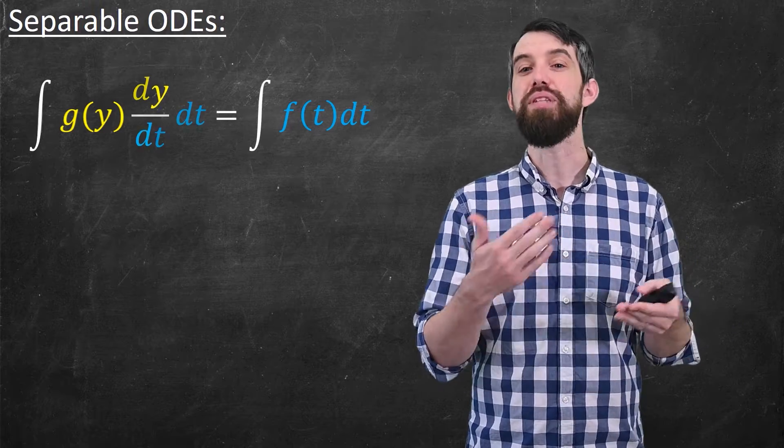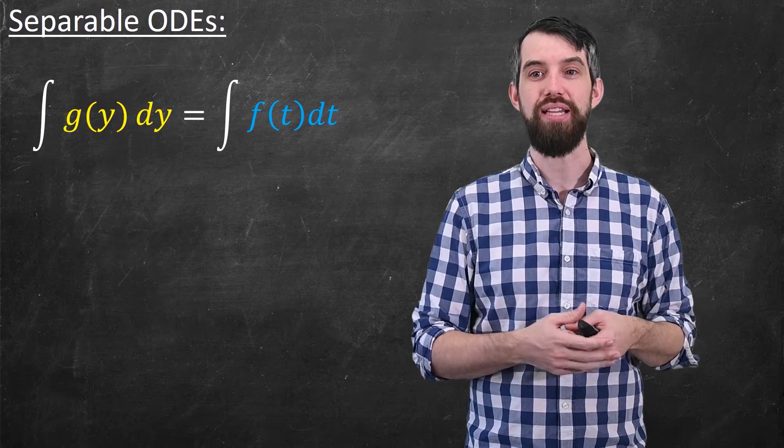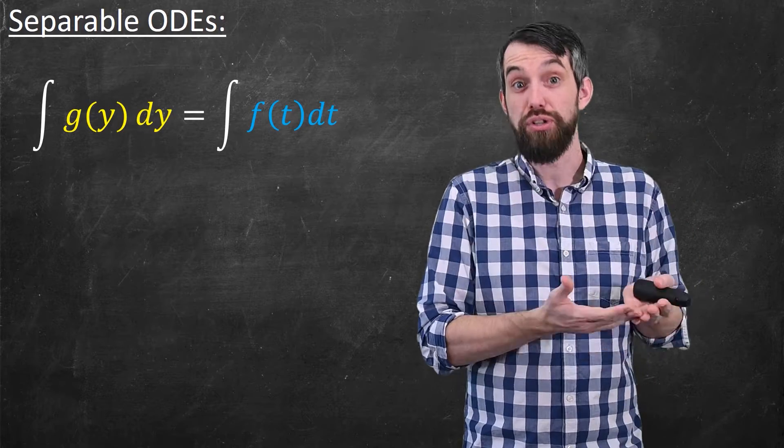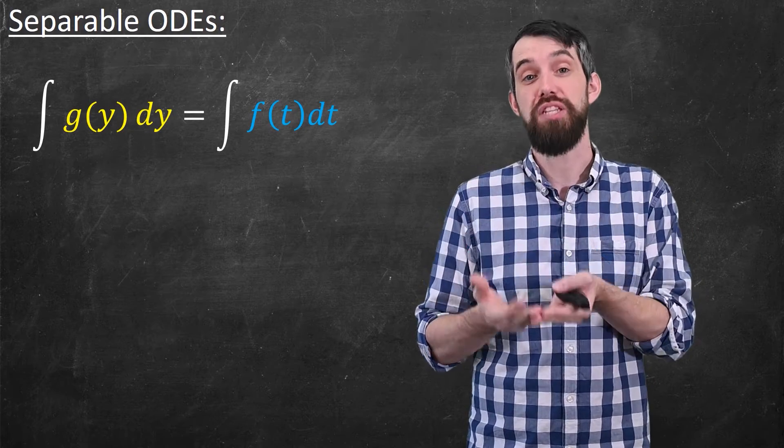Making the same definition that dy is going to be the dy/dt dt, I get now an integral in terms of y on the left, an integral in terms of t on the right.